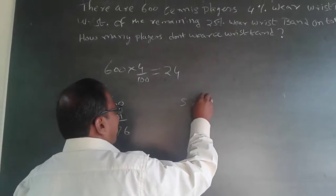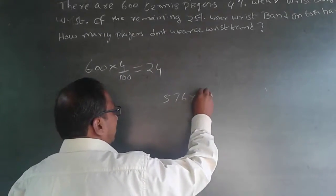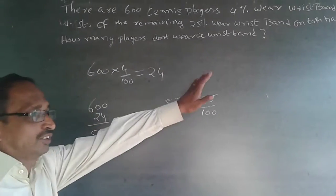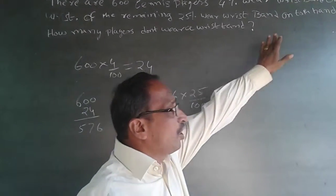So 576 into 25 by 100. 576 into 25 by 100. Are wearing wristband on both hands or both wrists. Are wearing wristband on both wrists.